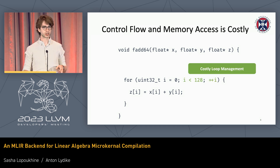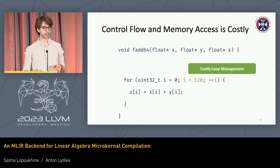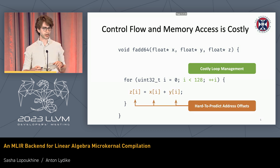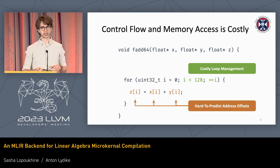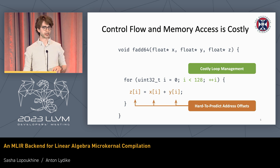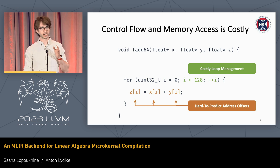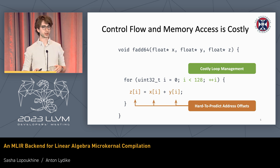The thing that is slow here is the loop management and the address offsets. Quite a lot of chips spend up to 90% of their area optimizing them using caches, branch prediction, and things like that — basically because they can't introspect into the meaning behind your code. But we can do better.